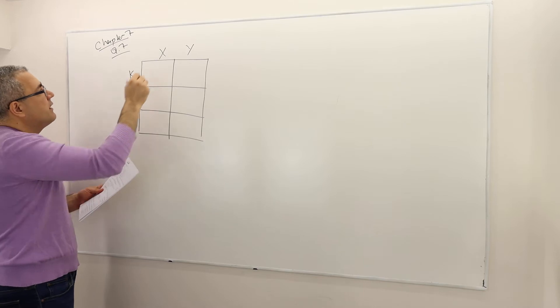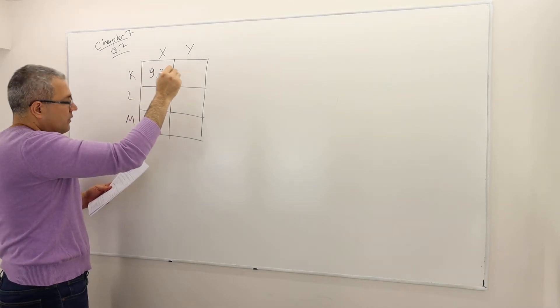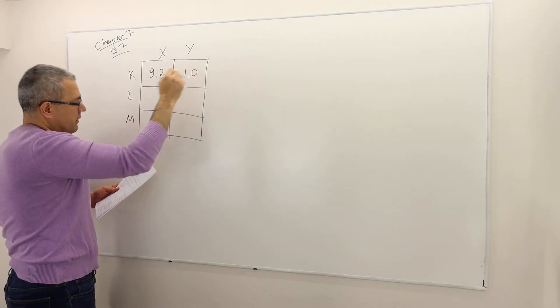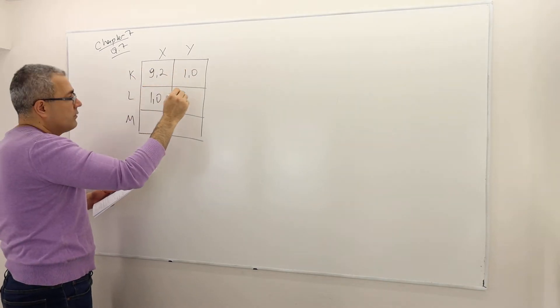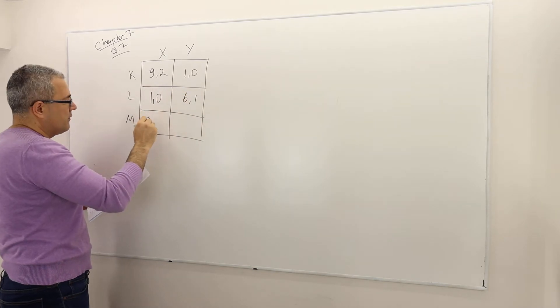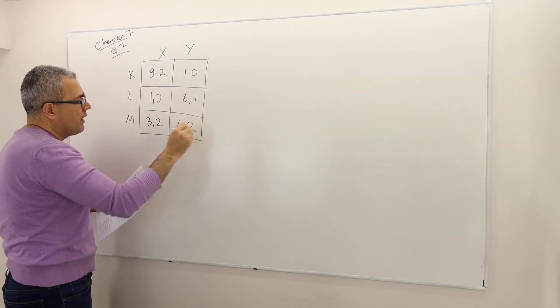The payoffs are: for strategy K — 9 and 2; for strategy L — 1 and 0; and wait, let me list them properly: 9, 2, then 1, 0, then 1, 0, then 6, 1, then 3, 2, then 4, 2.